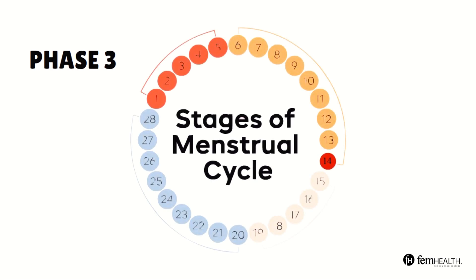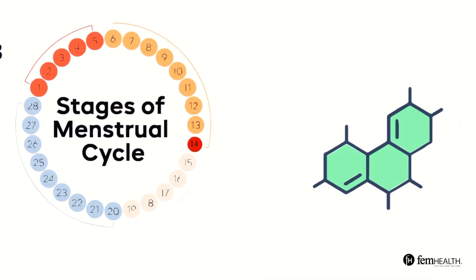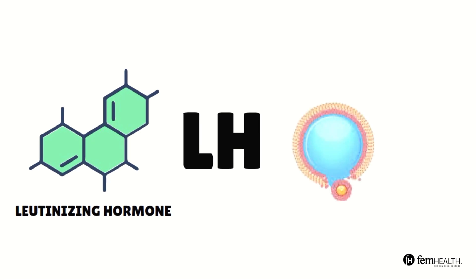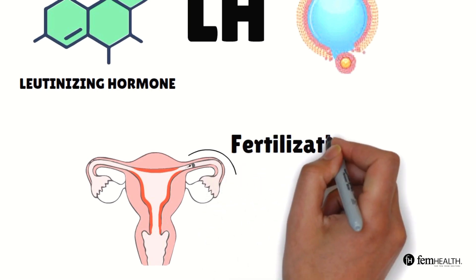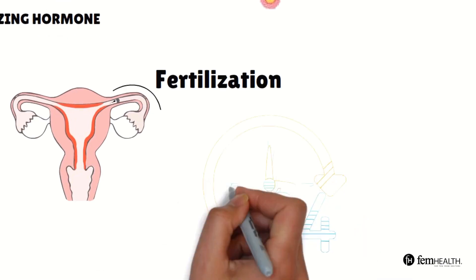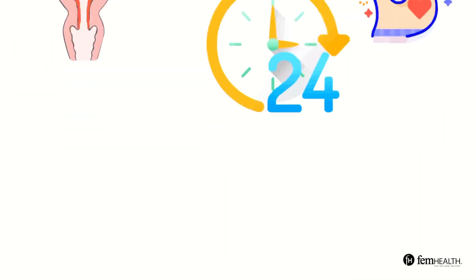Phase three is ovulation which happens usually around day 14 but of course everyone is different. Ovulation is when a hormone called luteinizing hormone which is often abbreviated as LH causes the ovary to release a mature egg. The egg travels into the fallopian tube and if it is fertilized by sperm then a pregnancy is likely to happen. Ovulation only lasts about 24 hours and it is the time when pregnancy is most likely to happen.